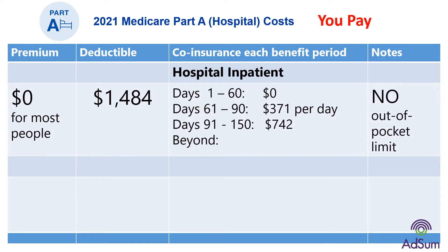There is no premium for Part A. Premium is the amount of money you pay monthly for health insurance, so you don't pay a monthly premium for Part A. There is a deductible — the amount you have to pay before your insurance kicks in. For 2021, your deductible for Part A is $1,484, and this amount can change each year. Beyond 60 days in the hospital, you have to pay some charges, and beyond 150 days, you are responsible for all costs. Hospitals often have patients recover in a skilled nursing facility, and you are responsible for all costs beyond 101 days. There is no cap or out-of-pocket limit.